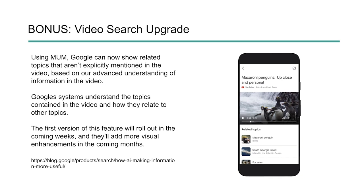As a bonus — not technically part of the search redesign, but important for video — Google now also understands topics within videos and can share related topics, even if they're not explicitly mentioned in the video, based on this advanced algorithm update. For example, a video about penguins can surface 'South Georgia Island' as a related topic even if it's not in the title. Google is crawling and learning from the video itself. If you're creating video content, look at these related topics because they can help you go deeper and cover aspects you might miss with just a keyword research tool.